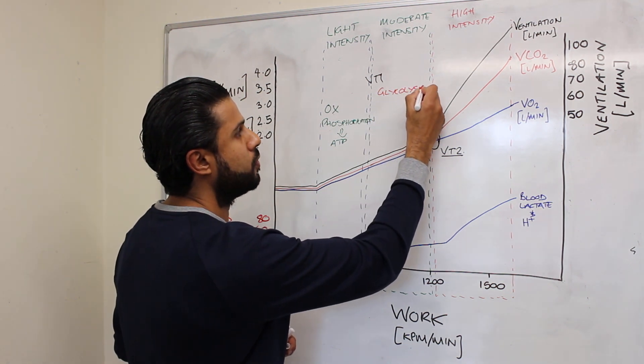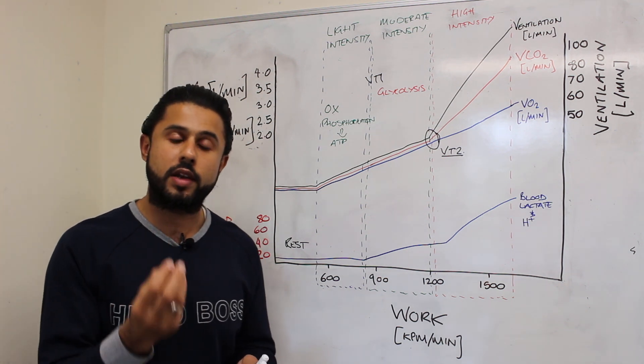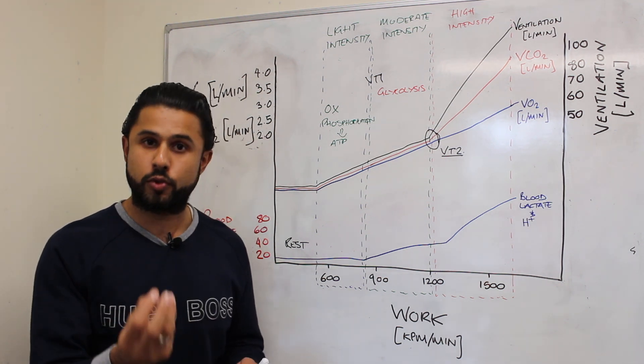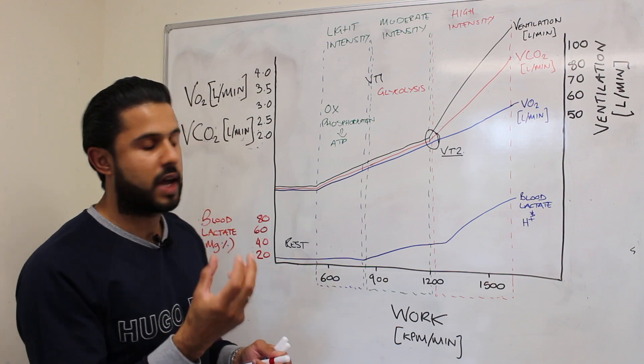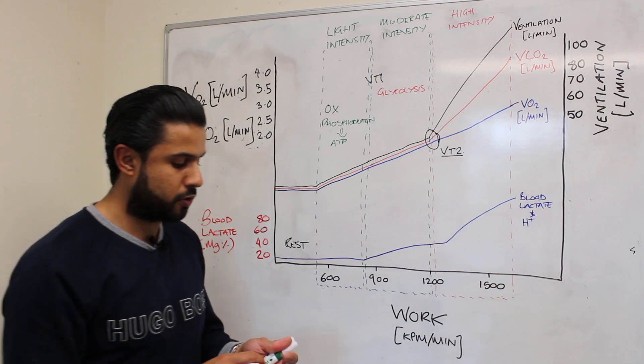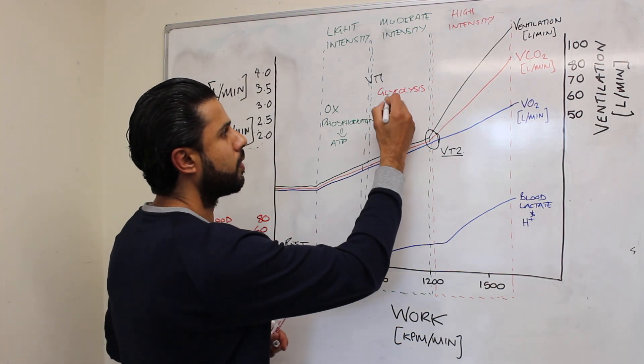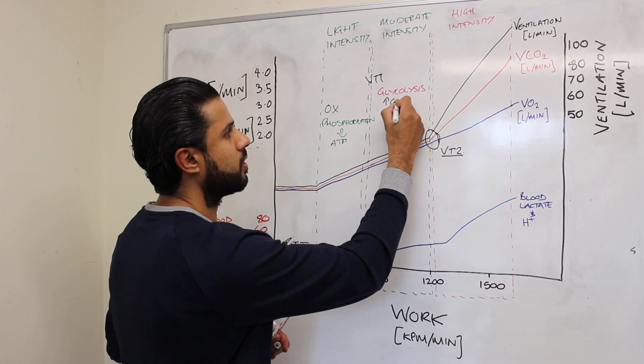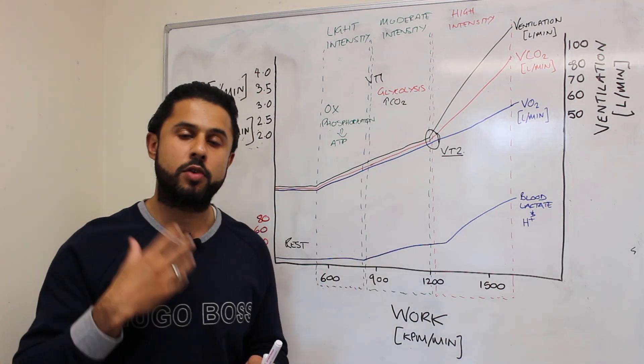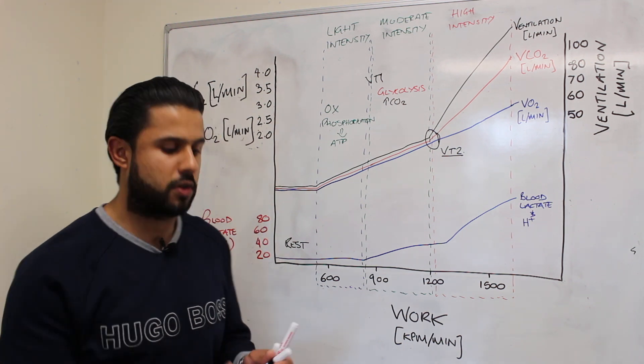Now anybody that knows about glycolysis knows that it's predominantly an anaerobic energy source, so it produces energy without the need for oxygen. It also produces high amounts of CO2. So as we start to rely more upon glycolysis our CO2 production increases and these are being detected by chemoreceptors located in different parts of the body sending signals back to the brain.